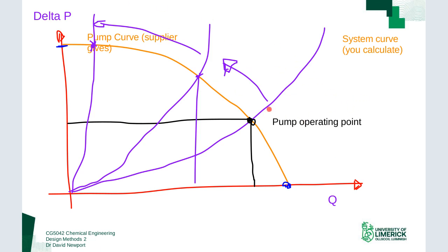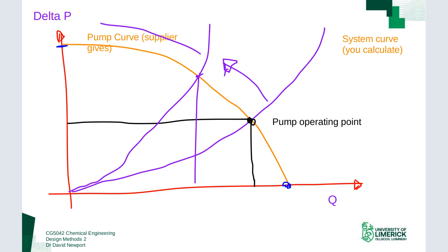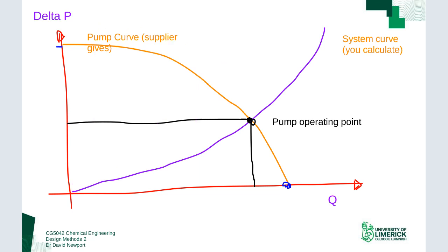With a control valve, you want very precise control over the full range so that it dominates the system — so that when you adjust it, it really has an influence. That's what a control valve does and how it affects our system and interacts with our pump system curve.